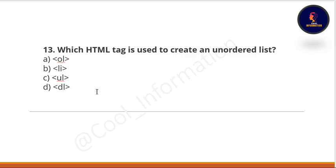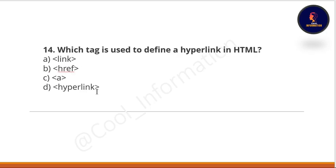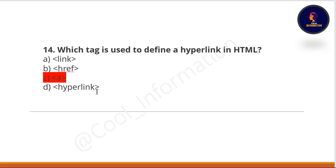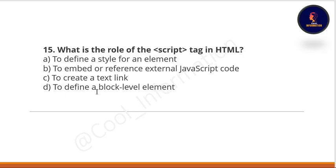Next question: which HTML tag is used to create an unordered list? Options: ol, li, ul, or dl. The correct option is C — ul element. Next: which tag is used to define a hyperlink in HTML? Options: link, href, a, or hyperlink. The correct option is C — the a tag, also called the anchor tag.